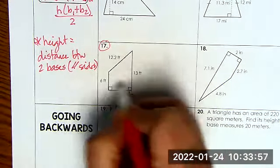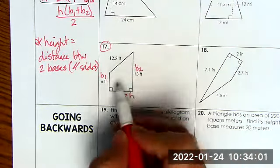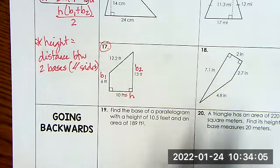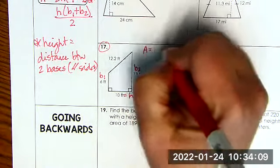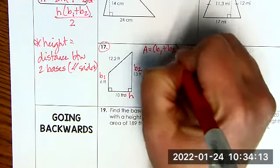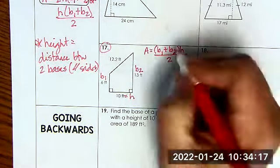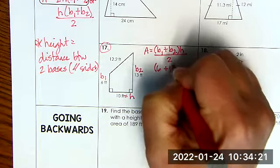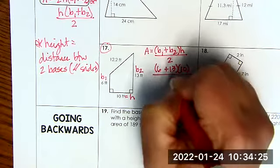Height is distance between two bases, which are the parallel sides. So here is my height, which means here is B1, here is B2. Now the bases could be interchangeable. This could be one and this could be two. That's not a problem. So now we write our formula. B1 plus B2 times the height all divided by two. So we have six plus 13 times 10 all over two.